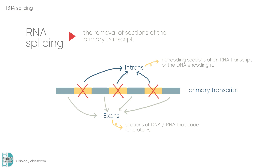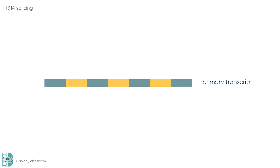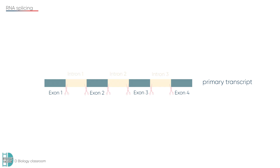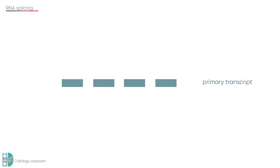This is what happens. The primary transcript produced in transcription contains both introns and exons. When RNA splicing occurs, the introns are cut out. The exons are then joined back together, becoming the mature mRNA.